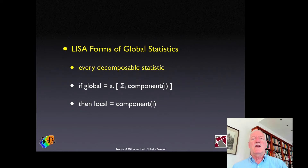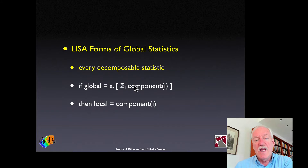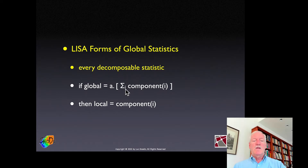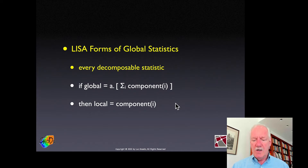What's important is that it's not just the local Moran statistic — there are many, many local statistics. Every time you have a global statistic that is some scaling factor times a sum over each observation of some expression — typically a sum over J over the neighbors — any time a global statistic is constructed like this, the local statistic is simply that component. Every time you see a double sum, sum over I and sum over J, take out the sum over I and what's left is the local statistic. The challenge then is to figure out how to carry out inference for this local statistic, which is not always straightforward.